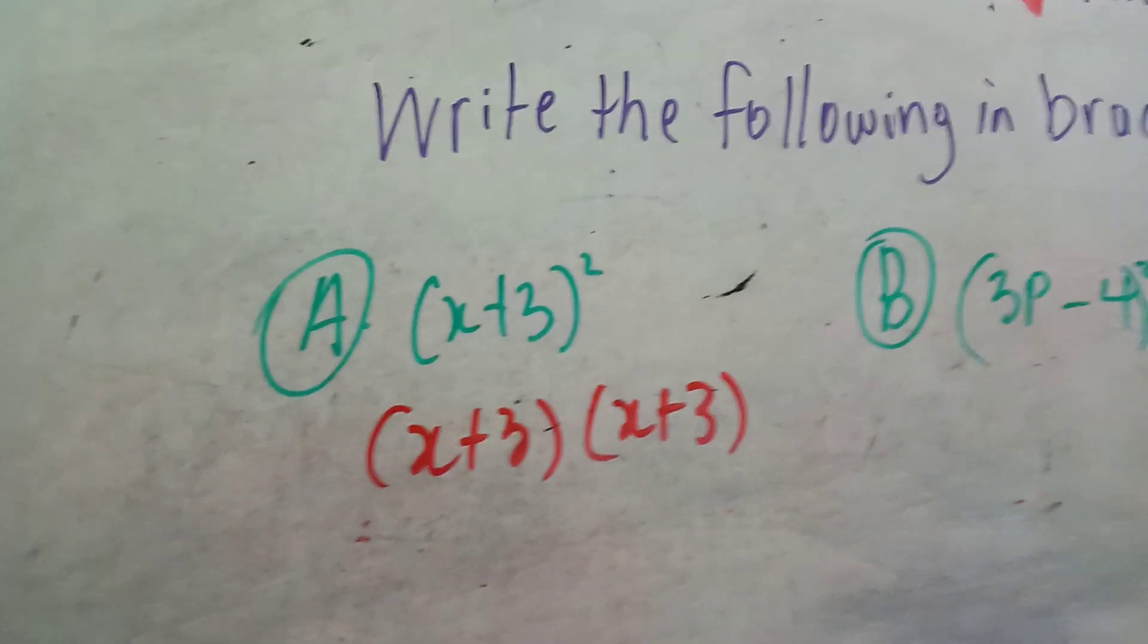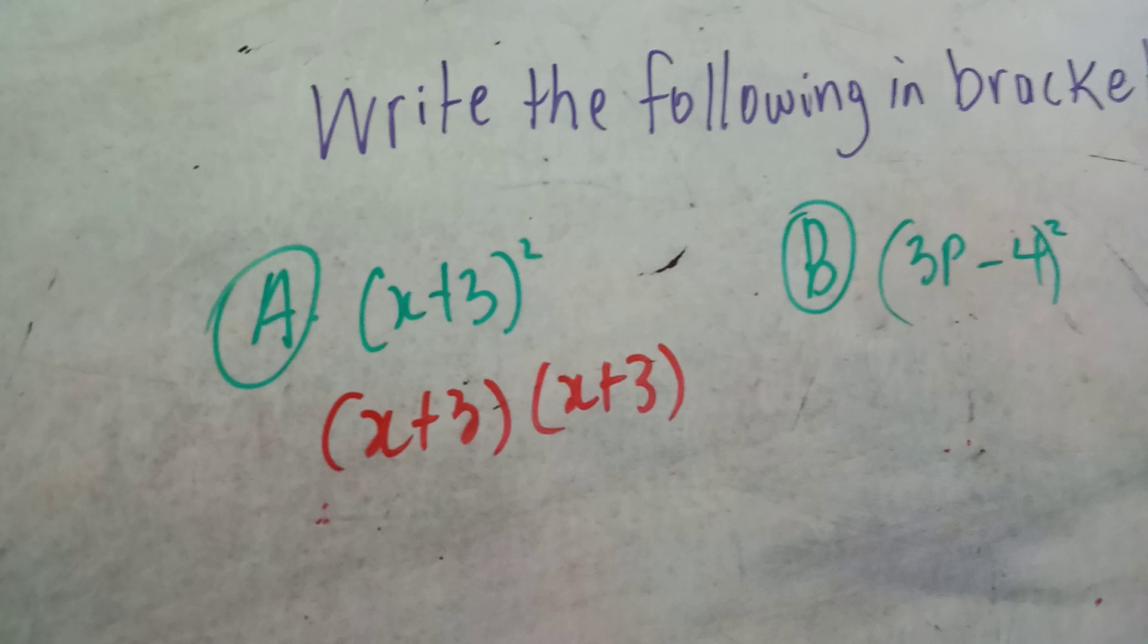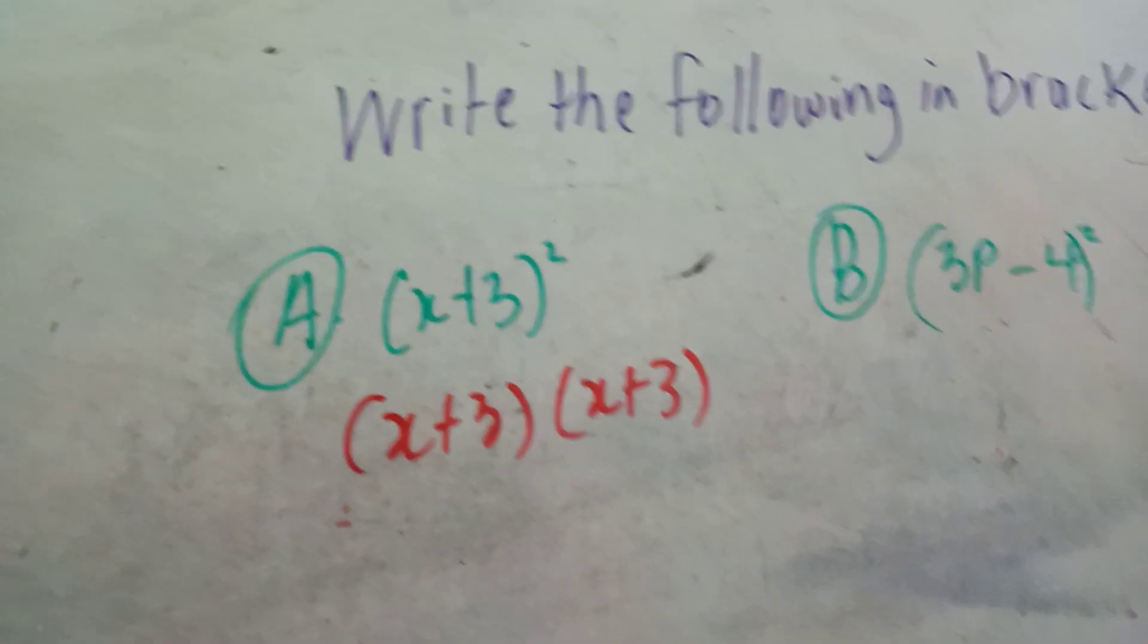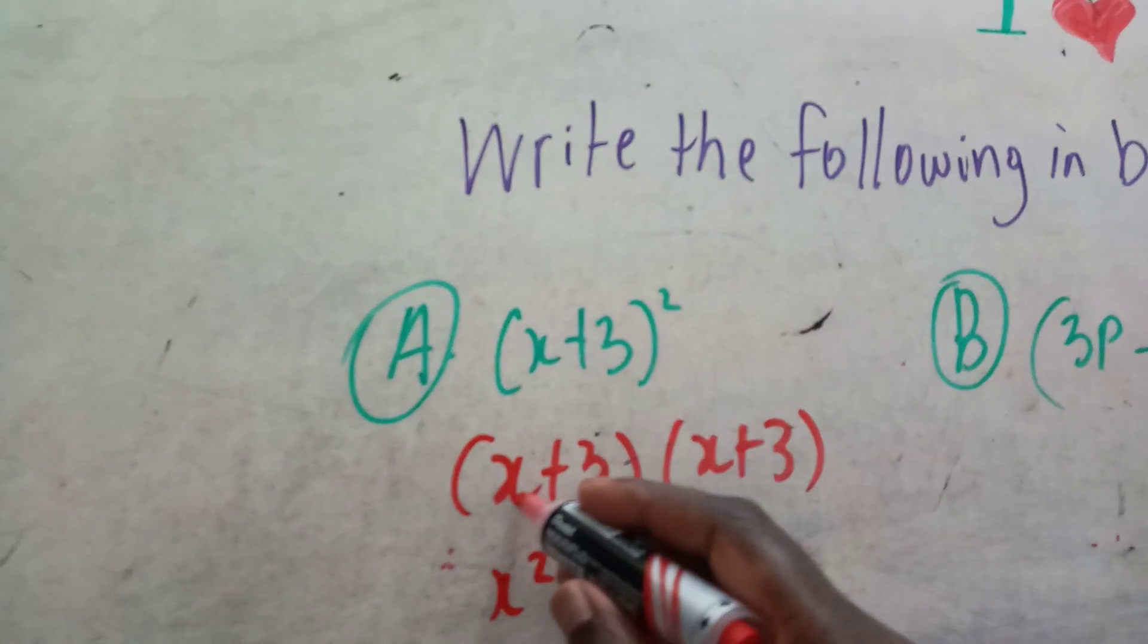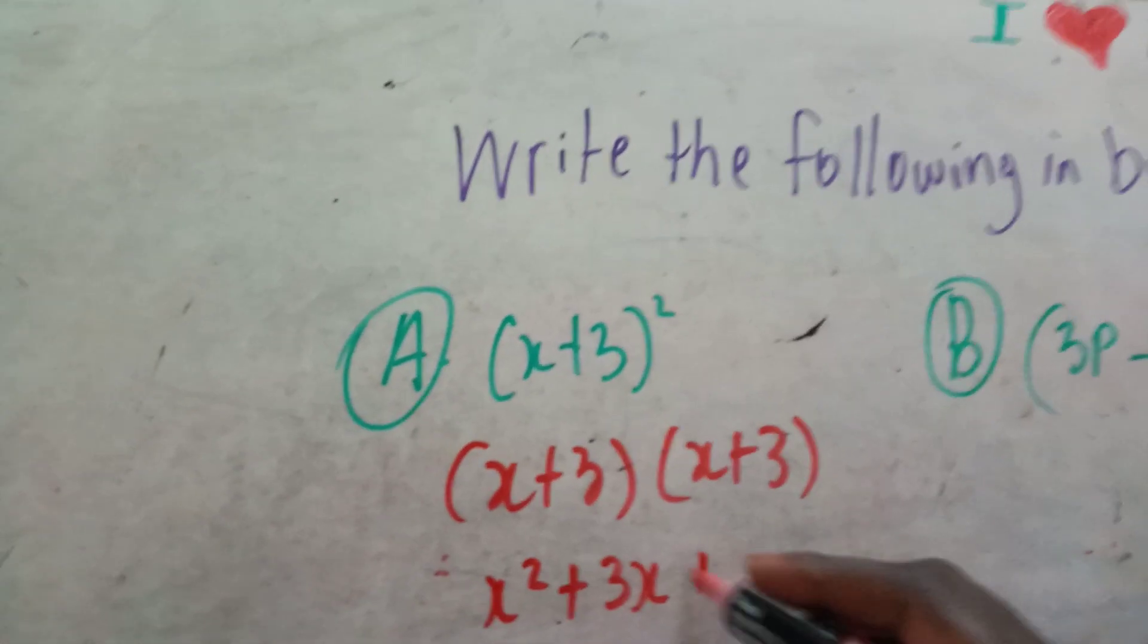That's how you write it out. Do we leave it like that? Oh no, we go further - we work it out. x times x is x², x times 3 is 3x, 3 times x is 3x, 3 times 3 equals 9.